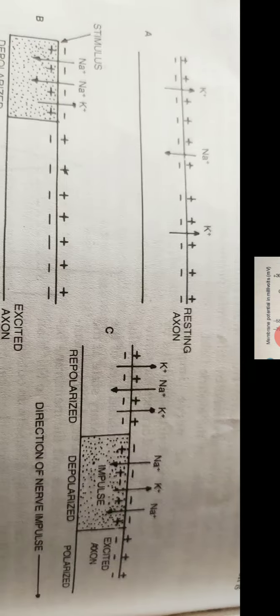This action potential travels as a wave of depolarization along the length of the nerve fiber in a particular direction and is called a nerve impulse.